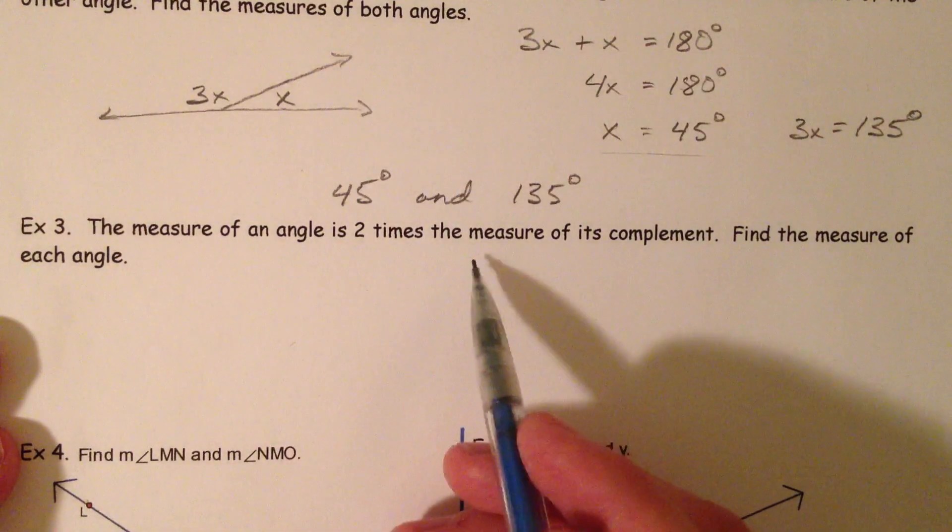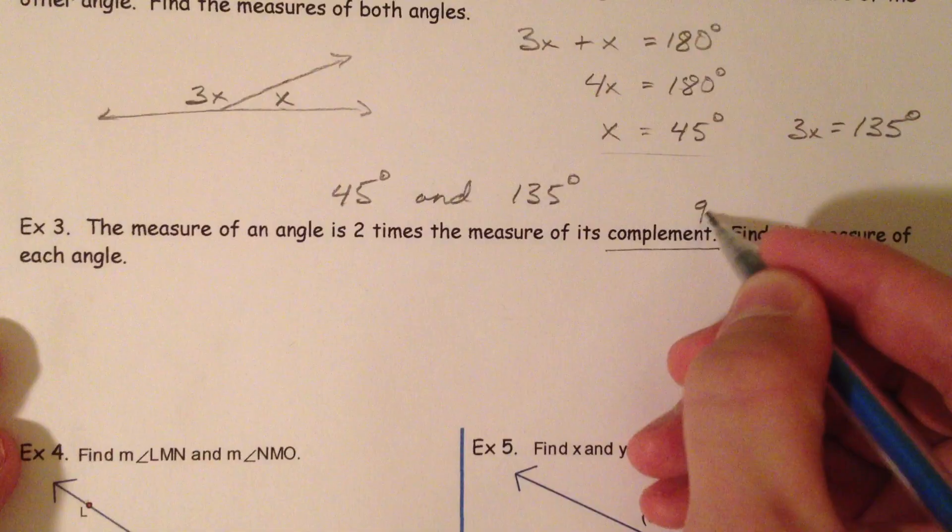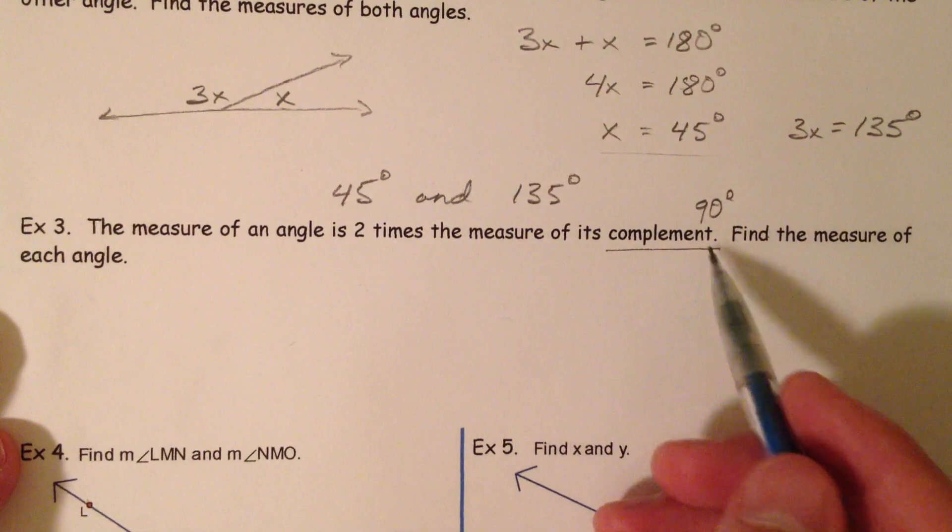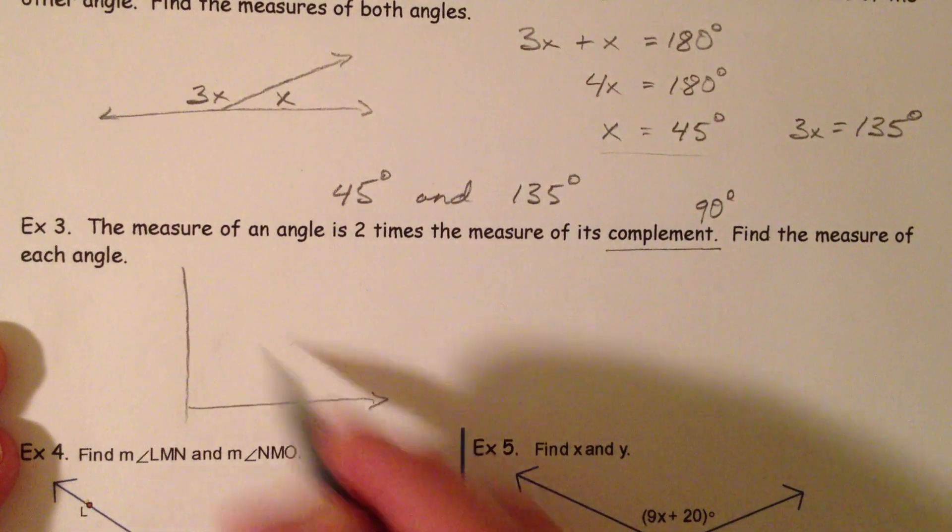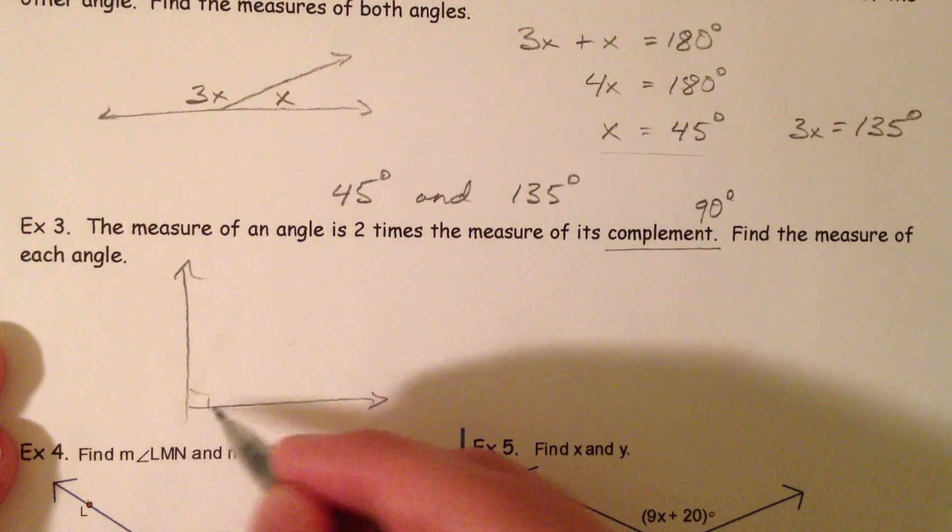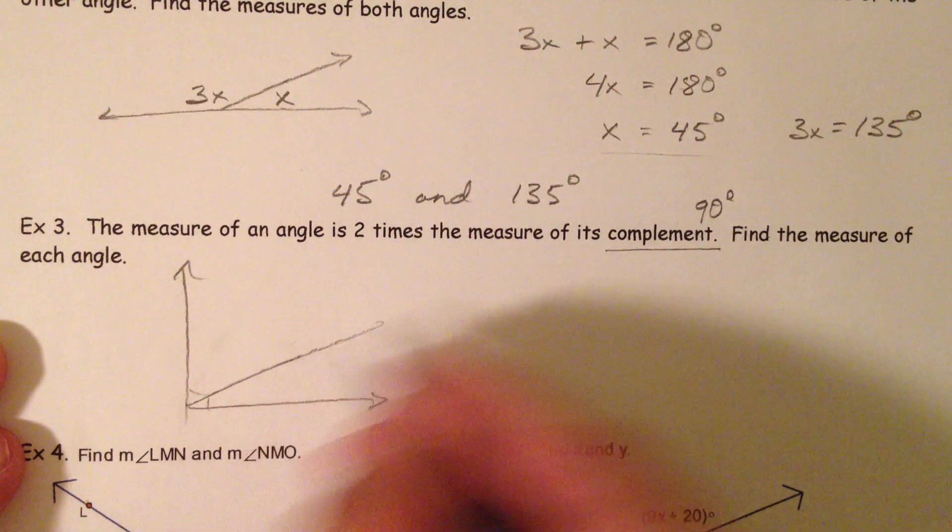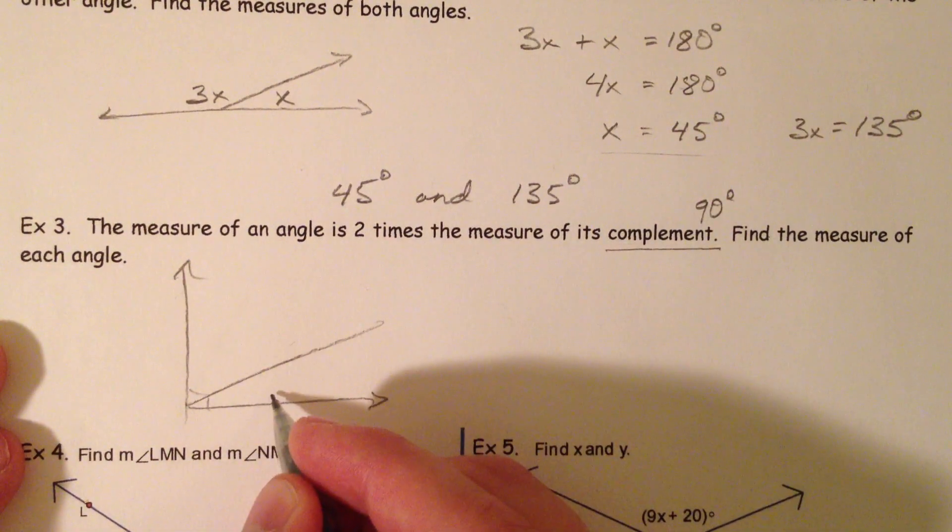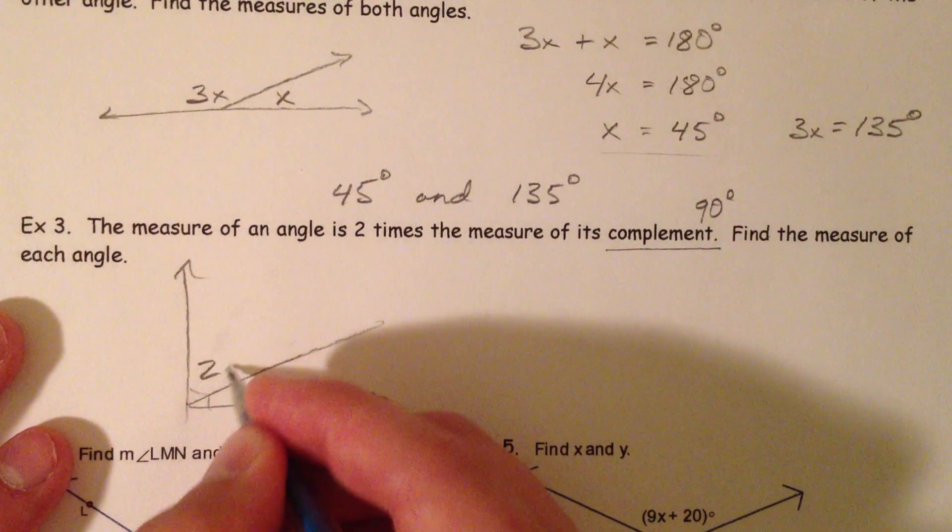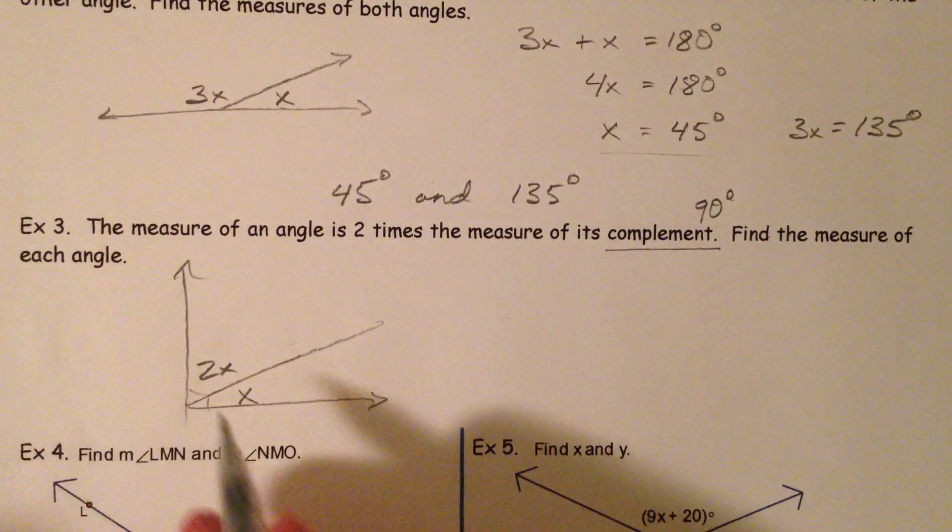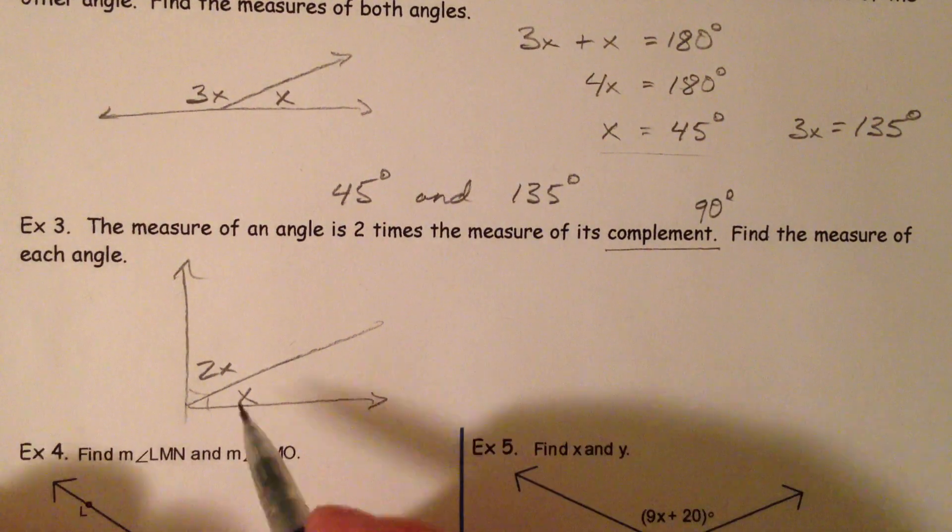The measure of an angle is 2 times the measure of its complement. Complement should ring as the one that adds up to 90. And so easiest way I can think of this is to draw it as if it adds to 90. So the measure of one angle is 2 times the measure of the one it's complementary to. And so let's pick something, and then pick the one that's twice as big. If you don't like X, pick A to represent angle. Whatever you feel like.